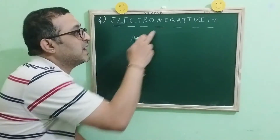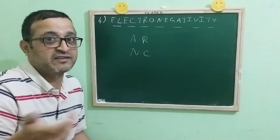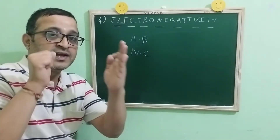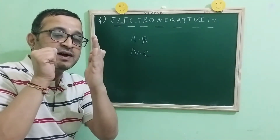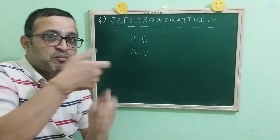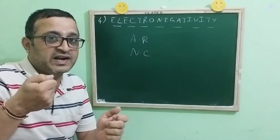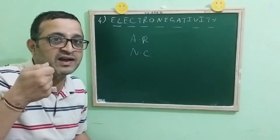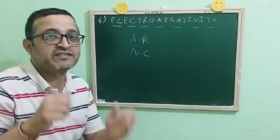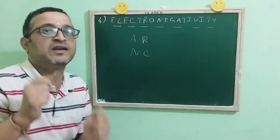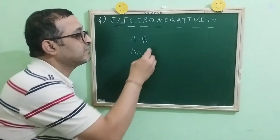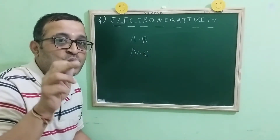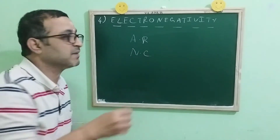The relationship between electronegativity and atomic radius — the smaller atom pulls the shared pair of electrons with greater force compared to the bigger atom. So the conclusion is: the smaller atom is more electronegative when compared to the bigger atom.